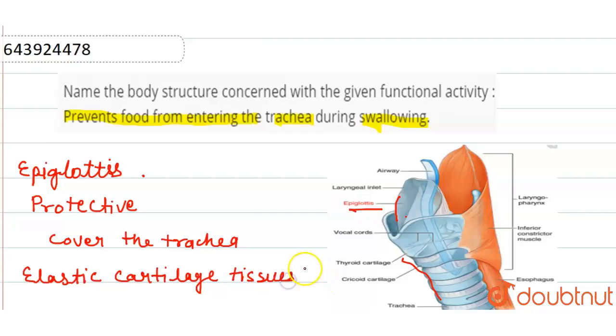And this tissue prevents the entry of food into the windpipe or lungs during respiration when respiration occurs.